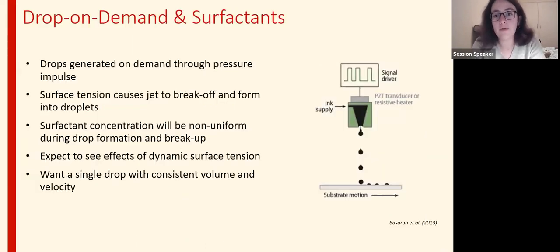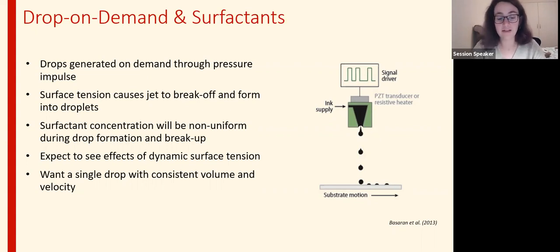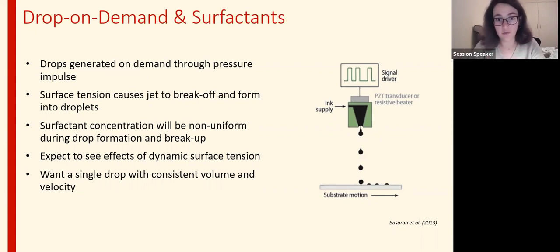A few words about what drop-on-demand is: it happens through a pressure impulse that's applied to the chamber that squeezes the ink out and generates the droplets we want. The jet is breaking up due to surface tension, so the flow is a surface tension driven flow, and this is happening quite fast, so we expect the surfactant concentration on the new surface being generated not to be uniform, not to cover the whole new surface that's created to form these droplets.